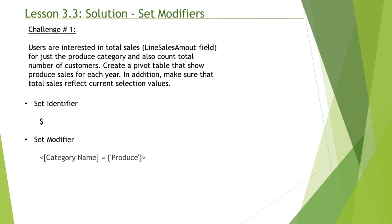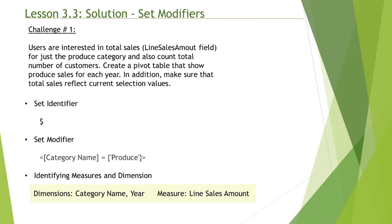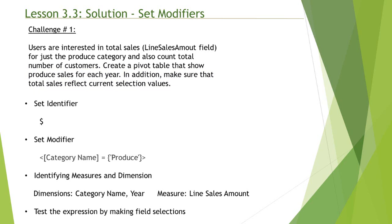Now let's identify the dimension and measure. The dimension is going to be category name and year, and the measure will be line sales amount, since you need to create a pivot table that shows produce sales for each year. Year is the clue that you need year as a dimension in addition to category name, and line sales amount is your measure because you're aggregating it as total sales. We'll also add filters so that users can make selections as stated in the challenge.